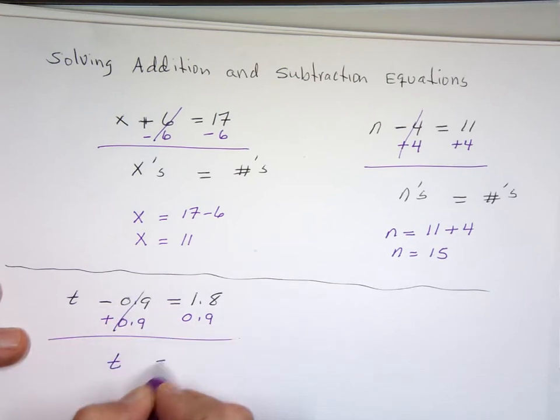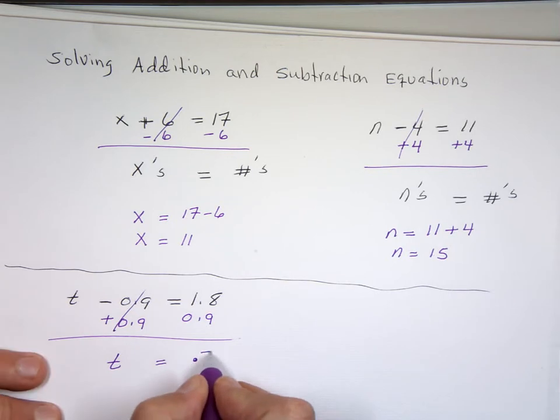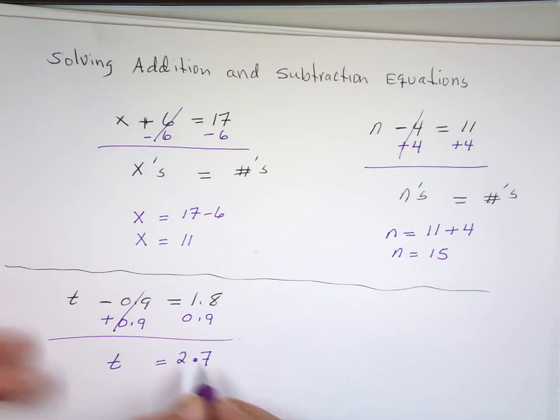So let's add them. Here's my decimal point. 9 and 8, which is what? 17. 7 carry 1. 1 and 1, 2. That's 2.7.